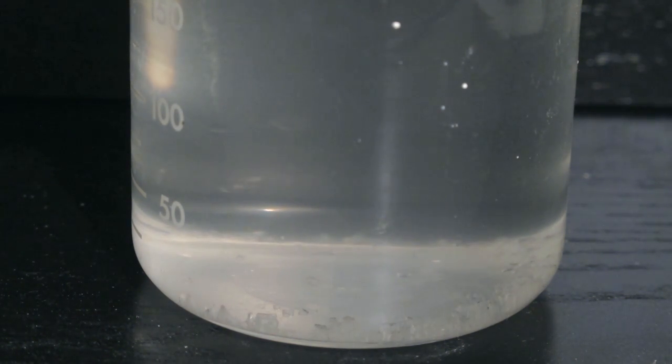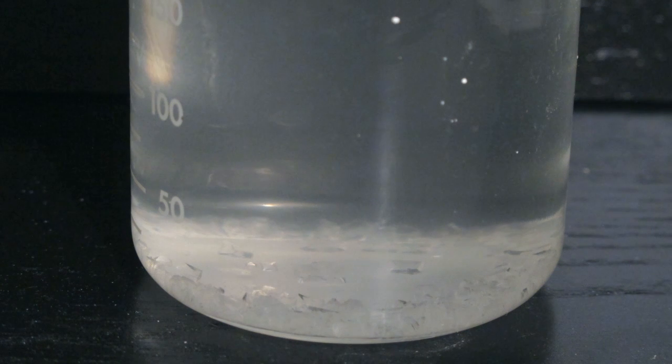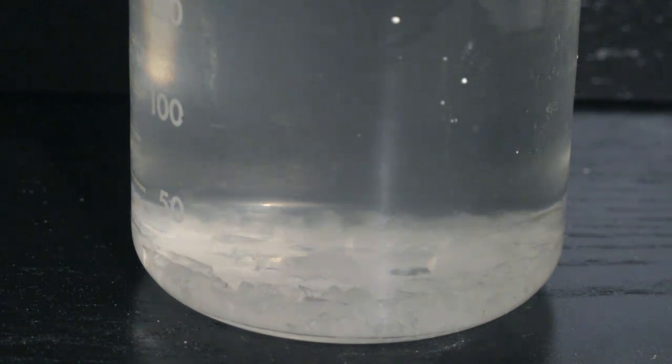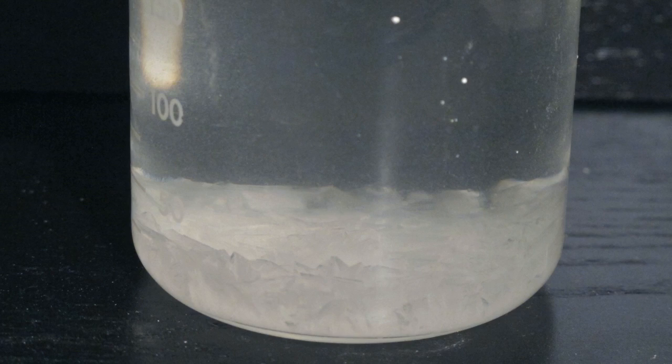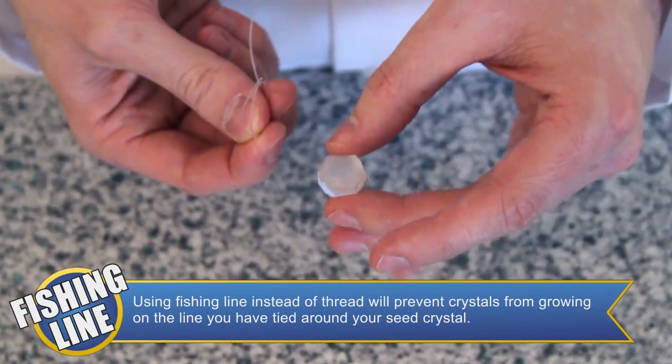Let the glass sit until you have a large enough seed crystal at the bottom of the glass to tie a fishing line around. This process can take a few hours or up to a few days to complete. Once you think you have a large enough seed crystal, pour the liquid into a new cup and remove the largest seed crystal.